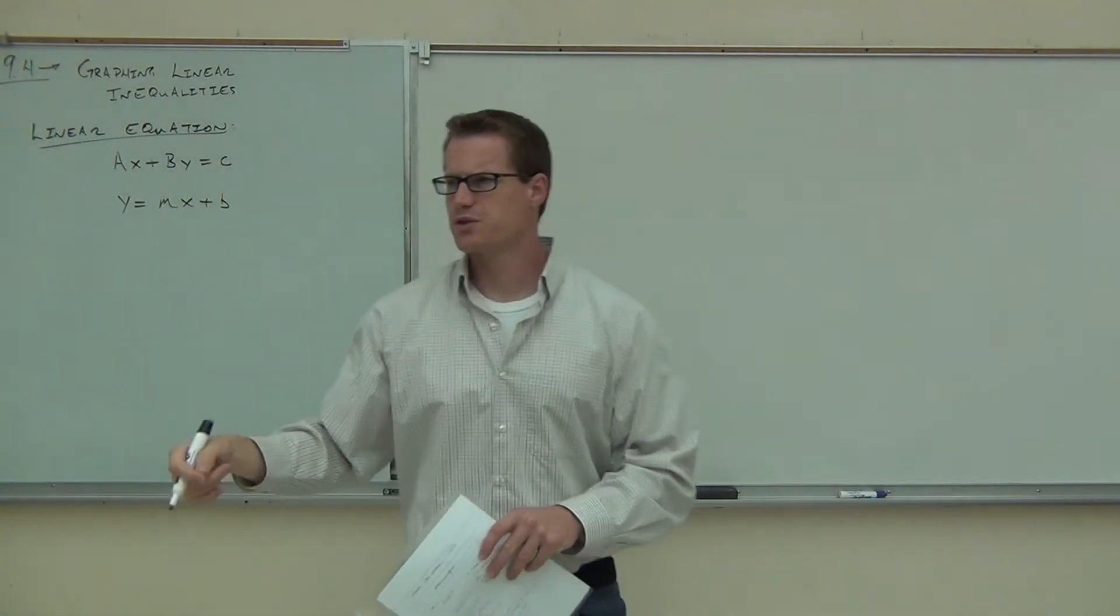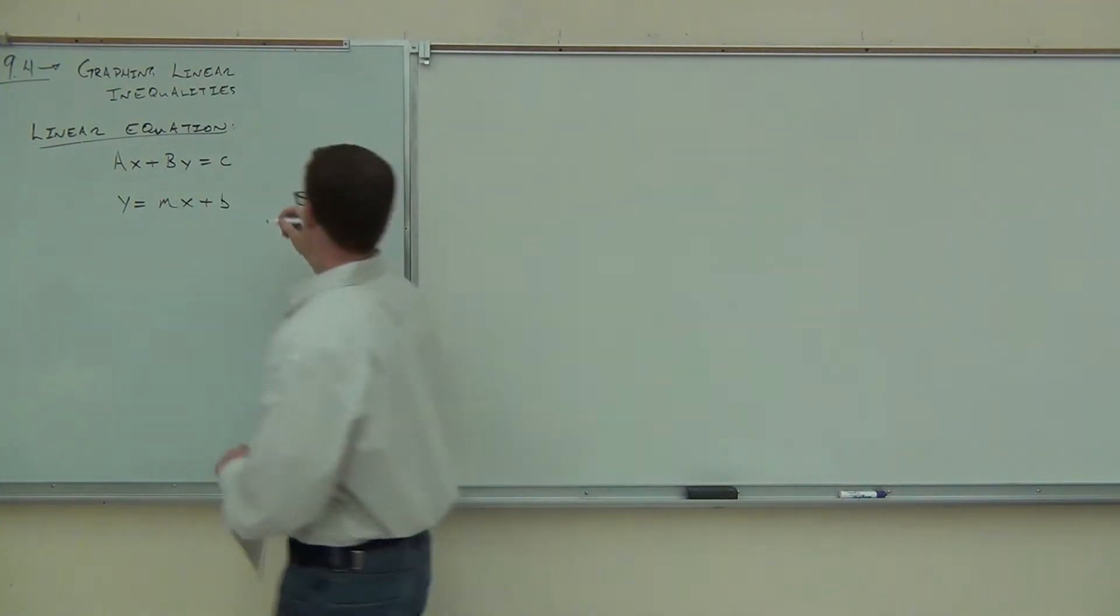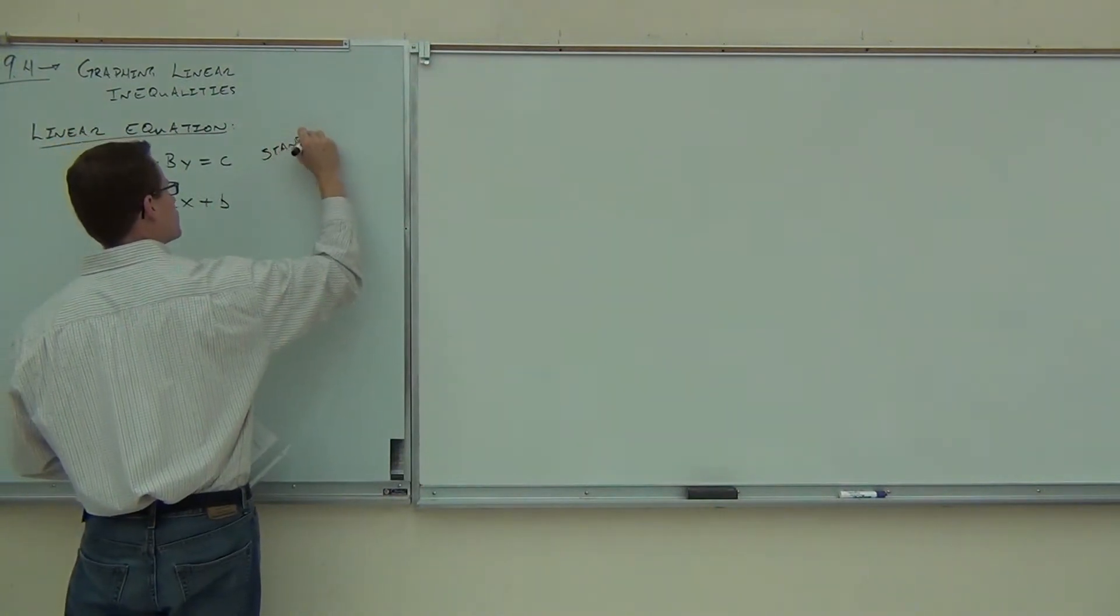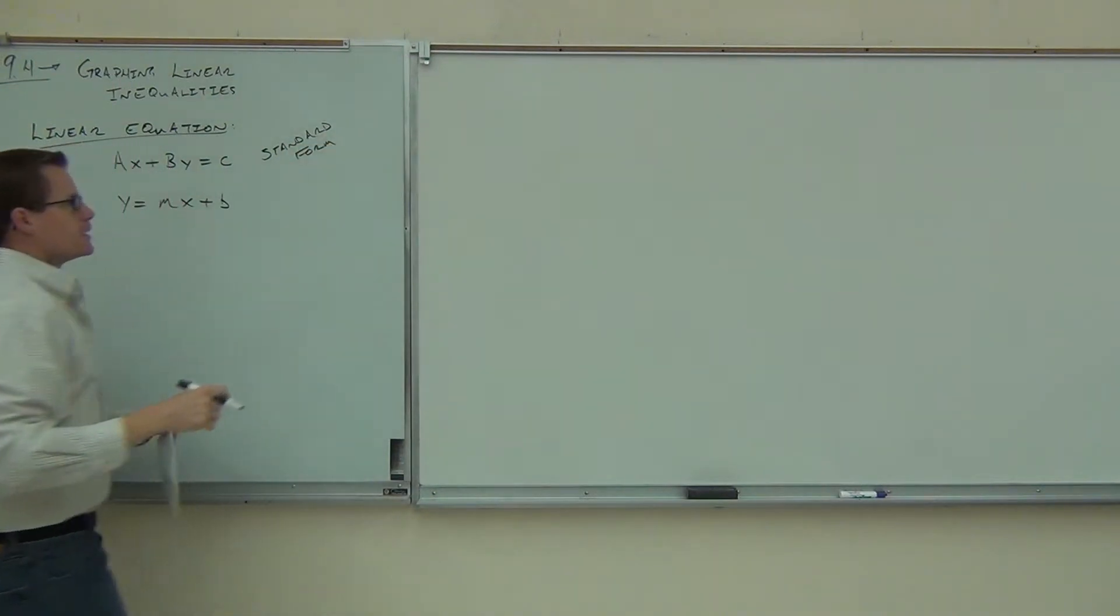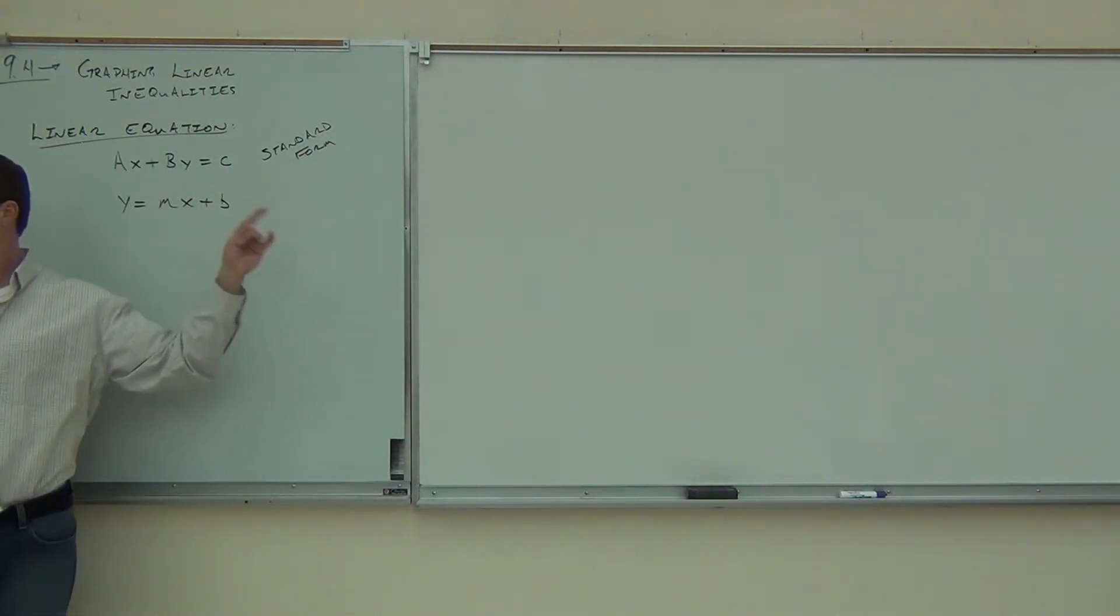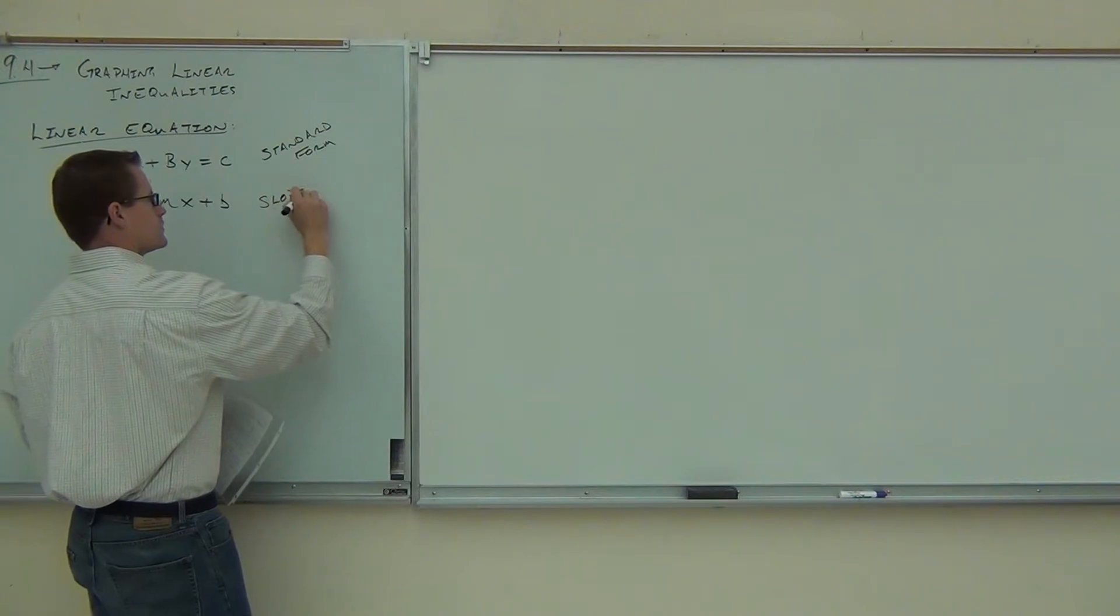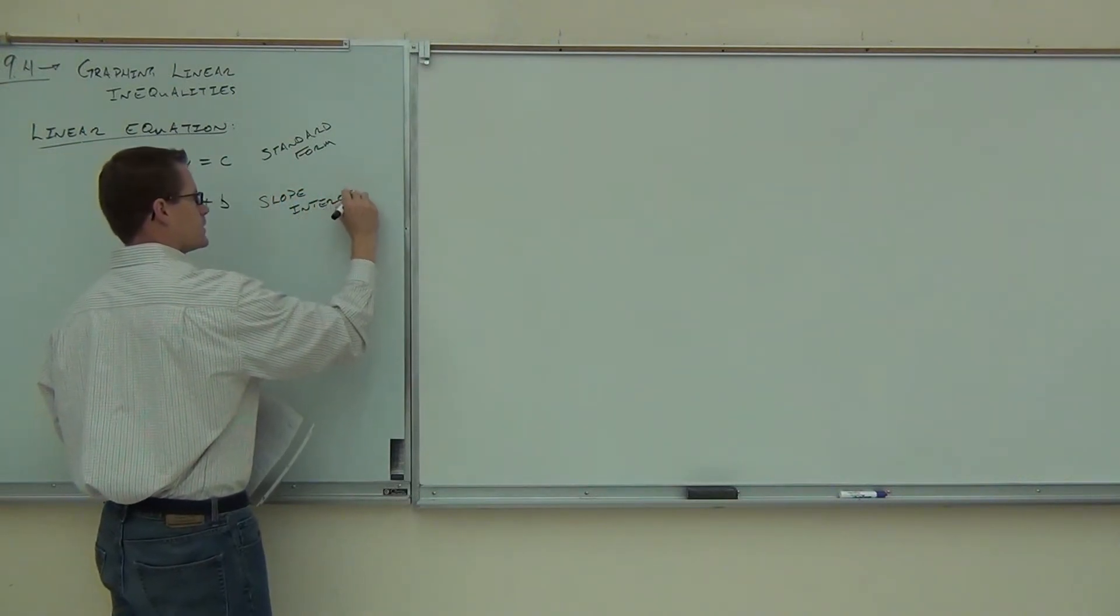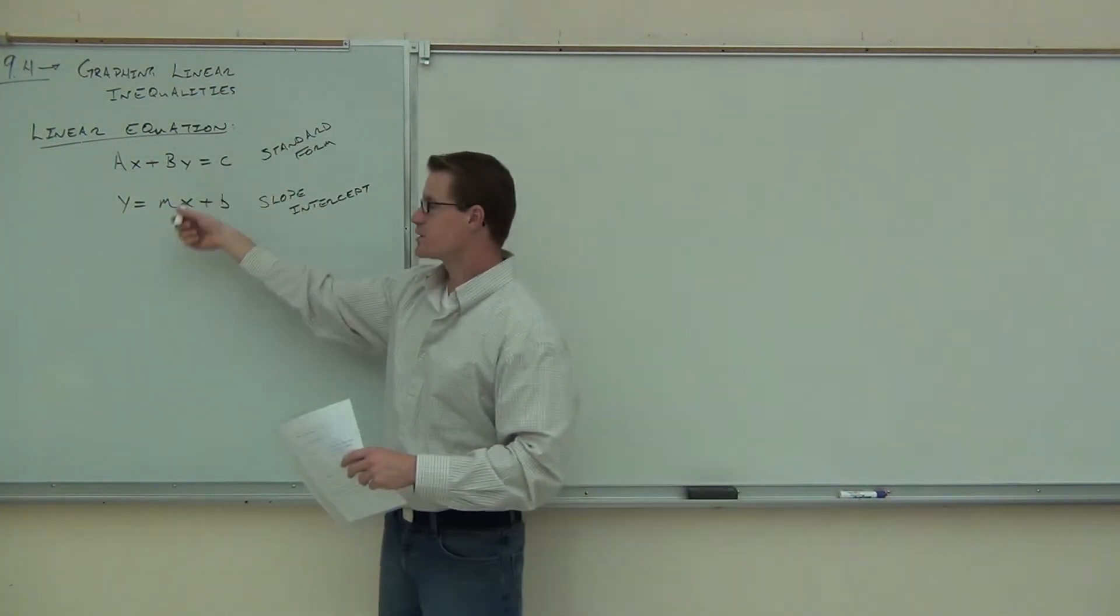Hopefully you're familiar with those two forms. What's the first form called? What is that? Standard form. Good, that is standard form. And this one down here, the y equals mx plus b, what's that one? Slope-intercept. And if you graph forms of equations that look like this, like this, what you're going to get out is a straight line on an xy-axis.